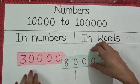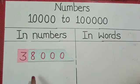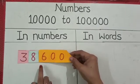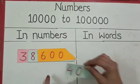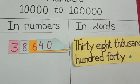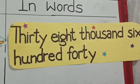30,000, 8,000. It will be read collectively, 38,640. And in words, thirty-eight thousand six hundred forty.